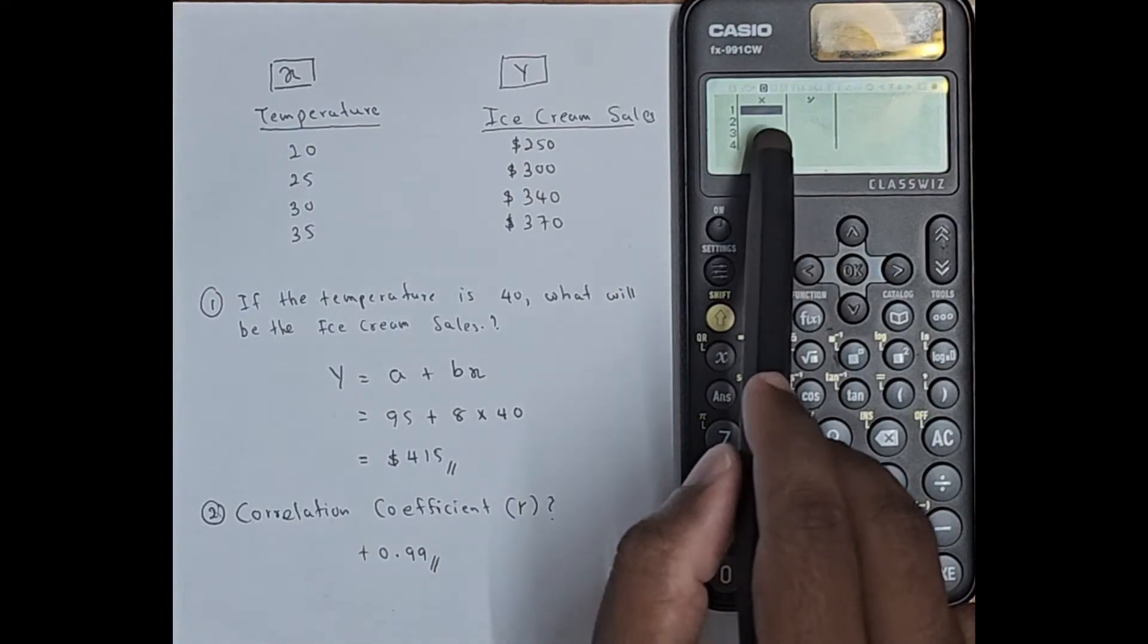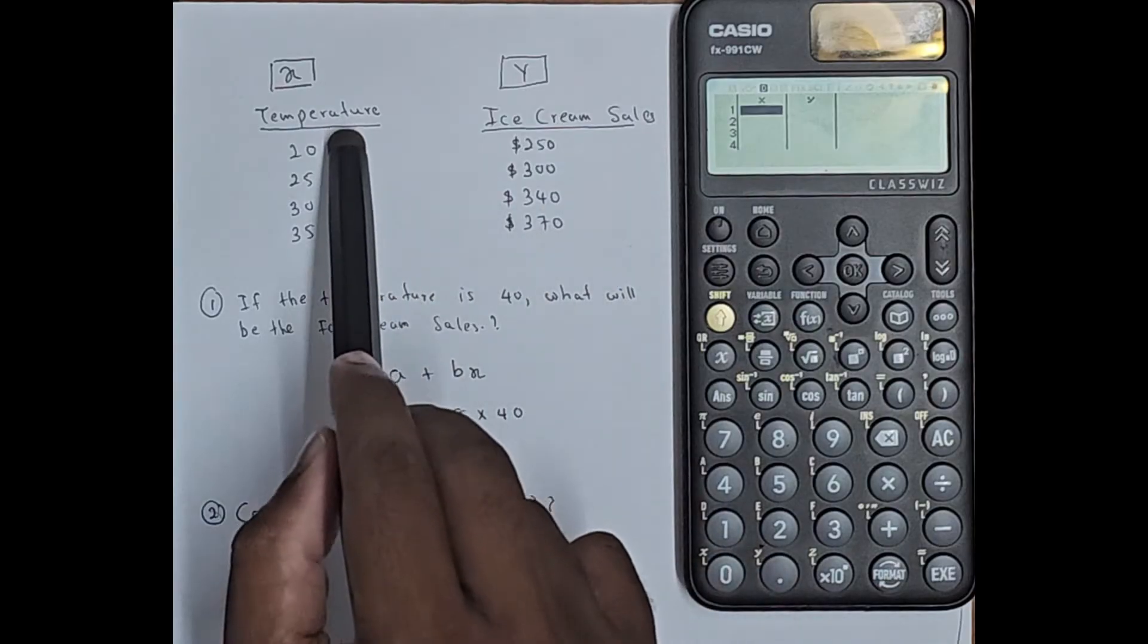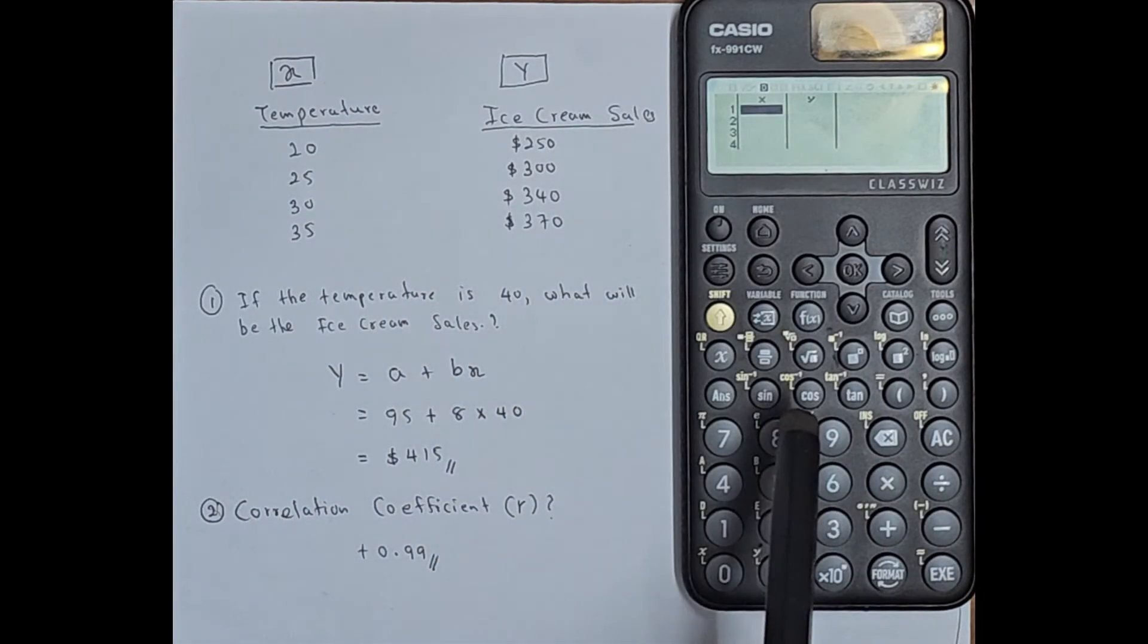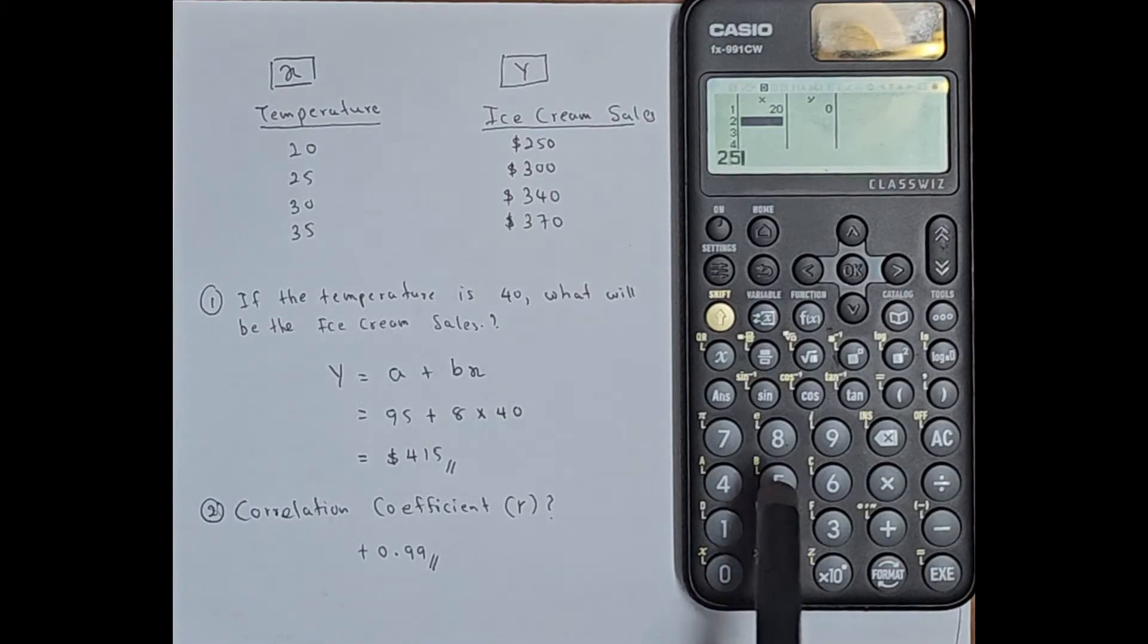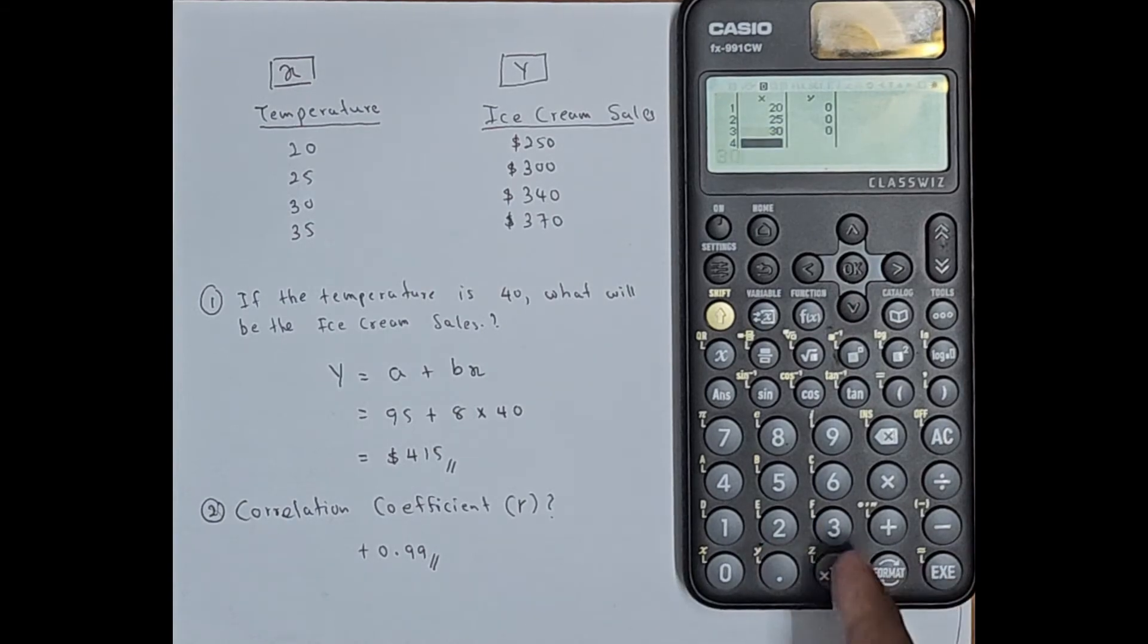Now here you can see a column for X as well as Y. Now you have to enter the X values in the X column and the Y values in the Y column. So let me enter the values: 20, then this EXE button, then 25, then 30, then 35.